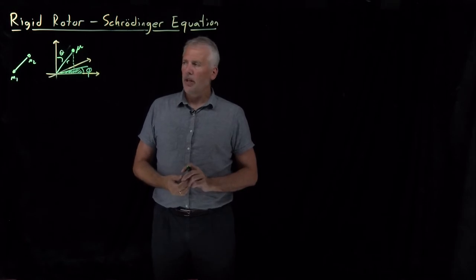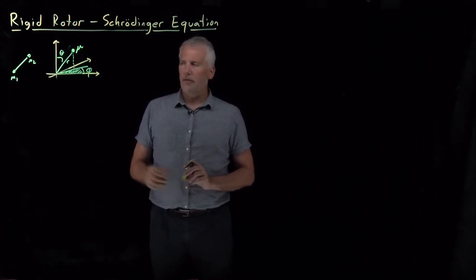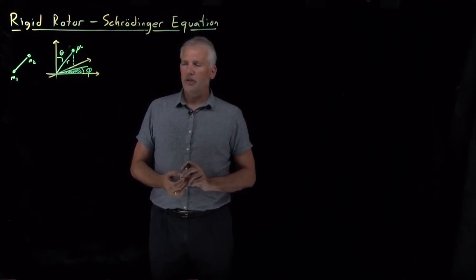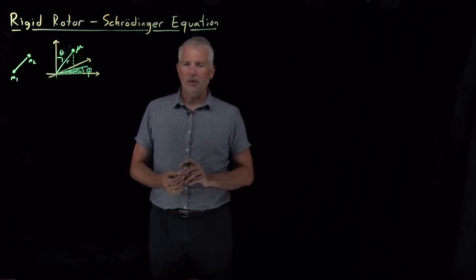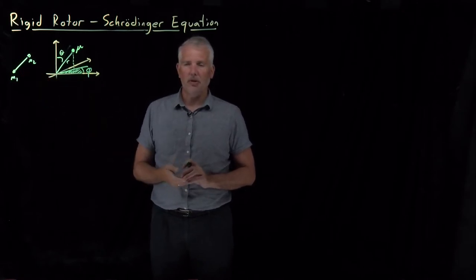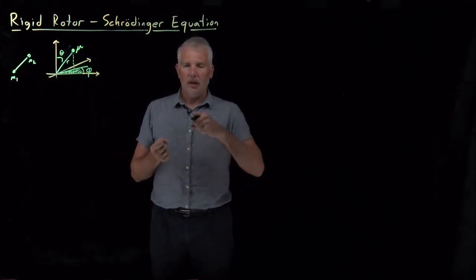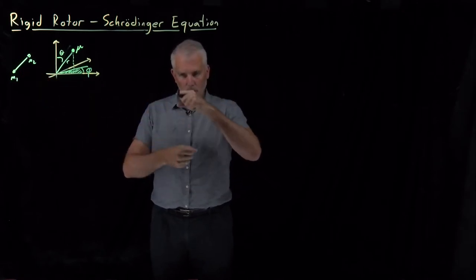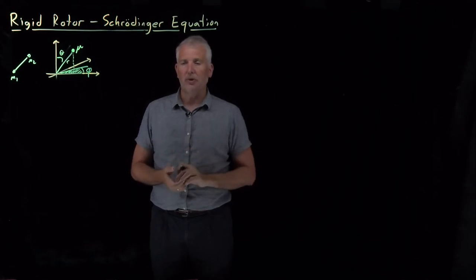The other advantage of using this coordinate system, in addition to reducing the number of variables, is that it helps us clearly distinguish between the two different types of motions this molecule can undergo: vibrational motions and rotational motions.